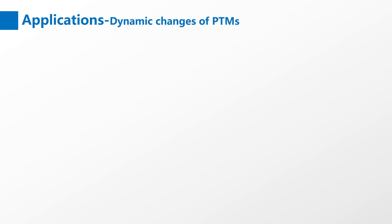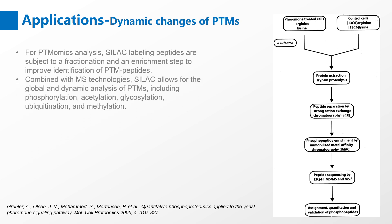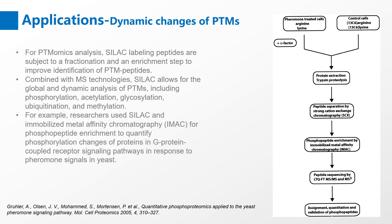For post-translational modifications analysis, SILAC labeled peptides are subject to a fractionation and an enrichment step to improve identification of post-translational modification peptides. Combined with mass spectrometry technologies, SILAC allows for the global and dynamic analysis of post-translational modifications, including phosphorylation, acetylation, glycosylation, ubiquitination, and methylation. For example, researchers used SILAC in immobilized metal affinity chromatography for phosphopeptide enrichment, to quantify phosphorylation changes of proteins in G-protein coupled receptor signaling pathways in response to pheromone signals in yeast.